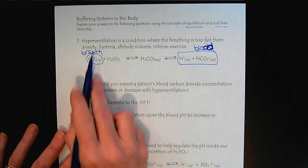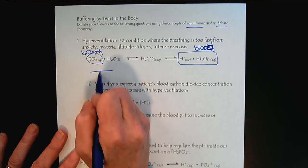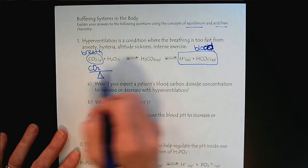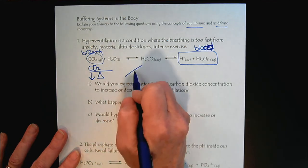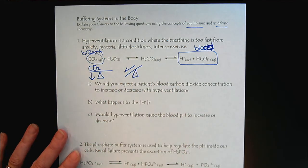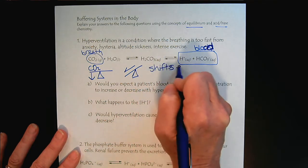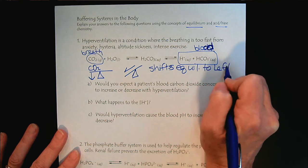So if we are breathing very fast, what does that do to our CO2 concentration in our blood? It's going to decrease it, because we're exhaling very quickly. So that's going to shift the equilibrium to the left.